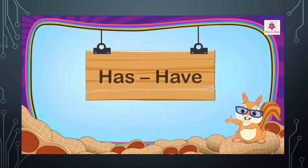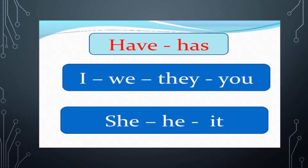Has is used with singular nouns and have is used with plural nouns. Have is used with I, we, they, and you. And has is used with she, he, and it.